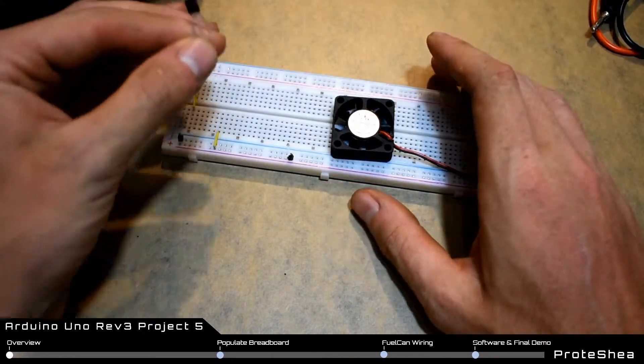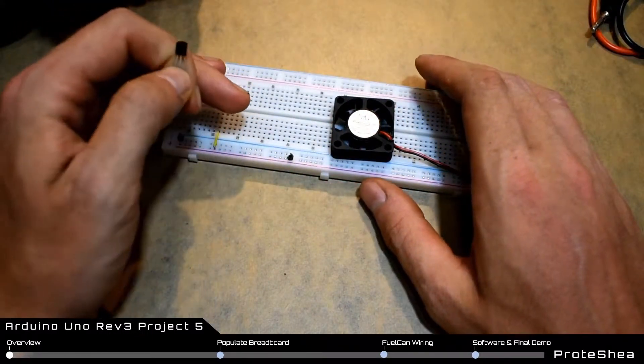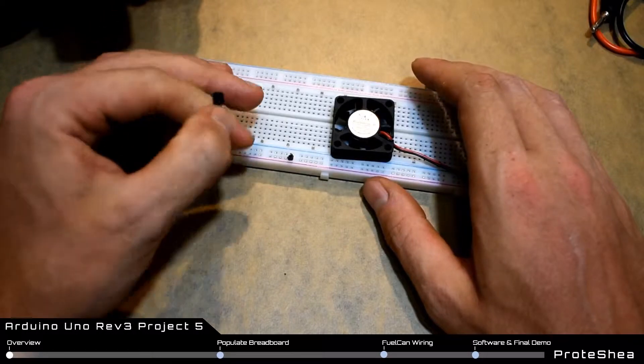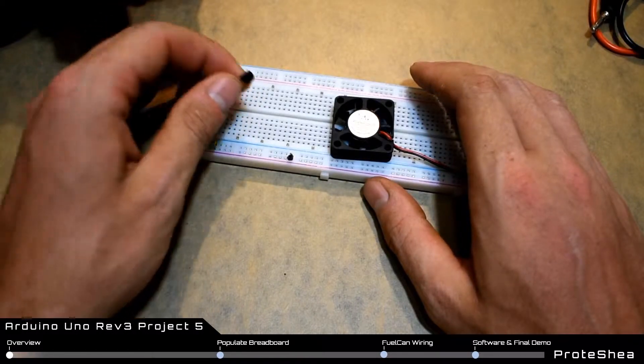The reason why we need an n-channel MOSFET is because the Arduino output pins can only source up to 40 milliamps.